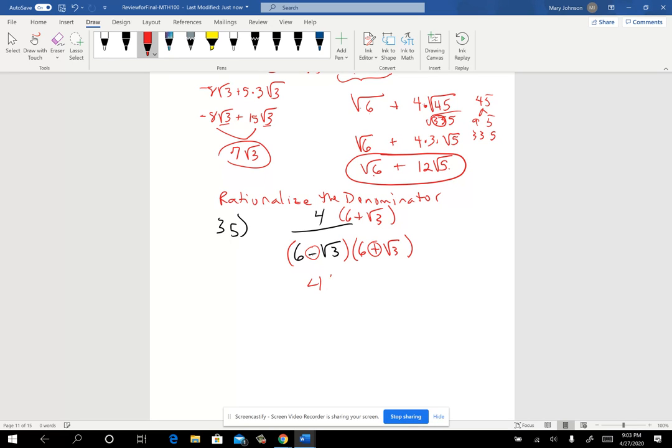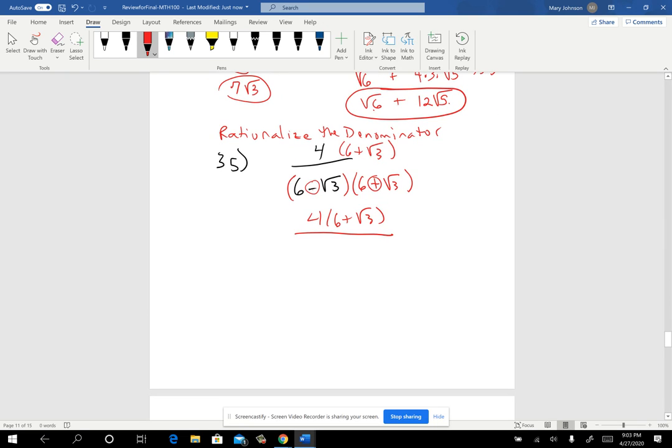I'm going to leave the top alone for a minute. I like to leave that factored, but when I start multiplying out the denominator, when I distribute the six throughout, I get 36 plus six square root of three. Six times six, six times the square root of three.